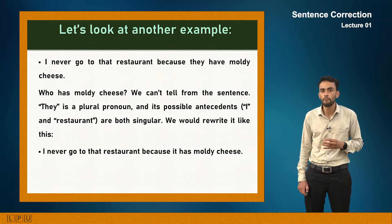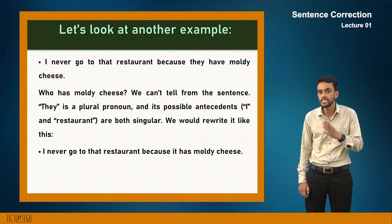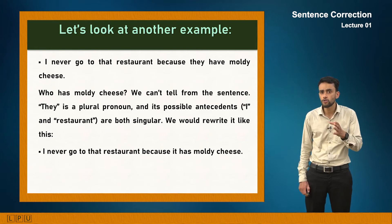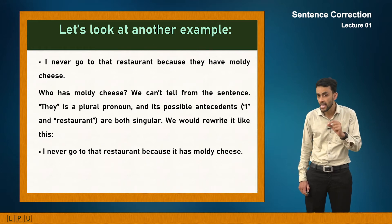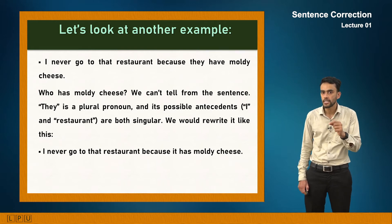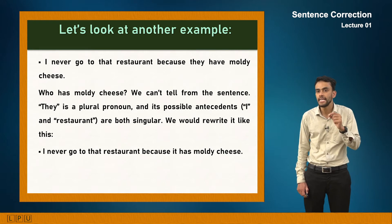Another example of pronoun reference: 'I never go to that restaurant because they have moldy cheese.' Here 'they' is used for 'restaurant', which is a singular entity and a thing, so 'it' should be used instead. The correct sentence is: 'I never go to that restaurant because it has moldy cheese.'